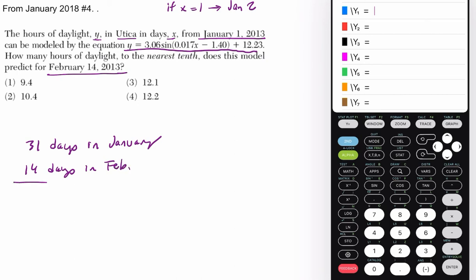And if we put those together, we get 45 days. But we want to take one day away because it's from January 1st. Again, so if it was on January 1st, you'd be looking at zero.